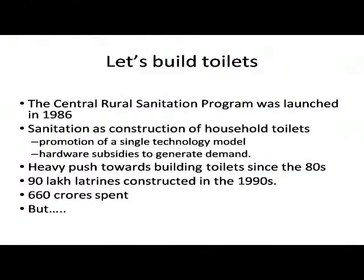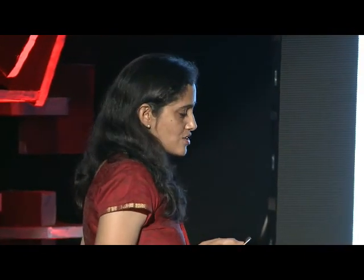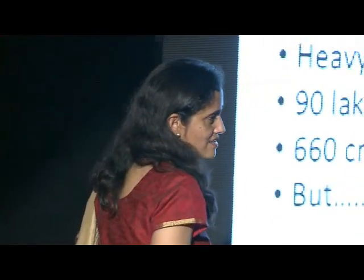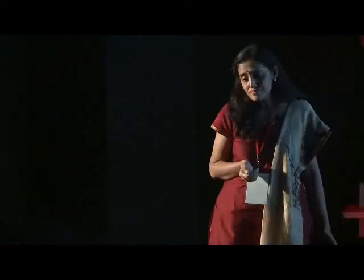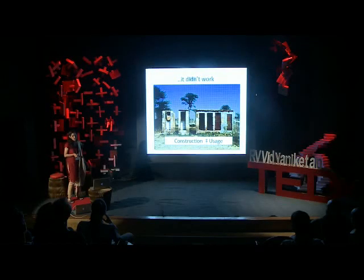India's sanitation program started in 1986, and at that time it was a very simple idea: sanitation meant building toilets. There was one model of toilet, and that was built everywhere. Ninety lakh toilets were constructed in the 1990s. A lot of money was spent. But it didn't work. You go all across rural India and you see signs like this — basically, construction is not usage.